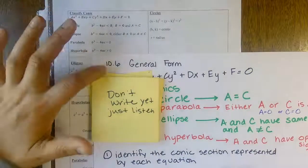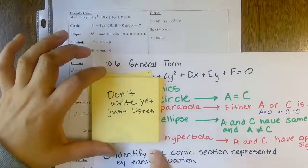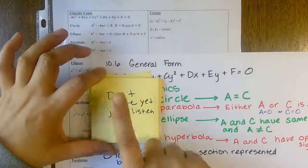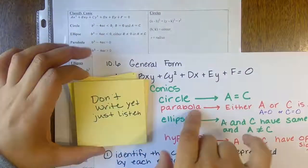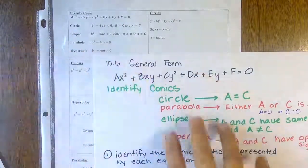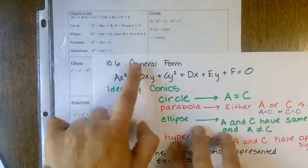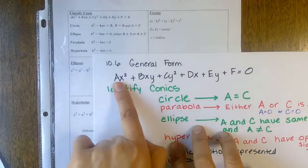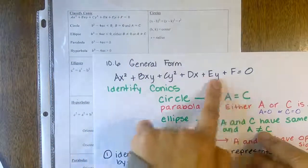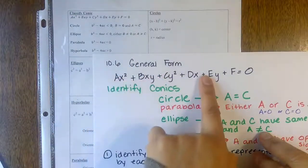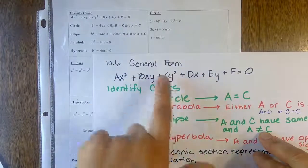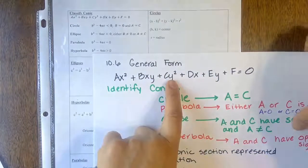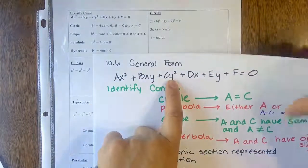Today we're going to do section 10.6. What we're doing is learning about general form — given general form, tell me what type of conic section it is, tell me to go ahead and graph it.